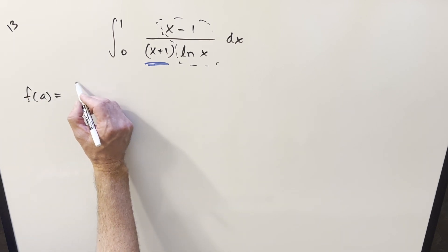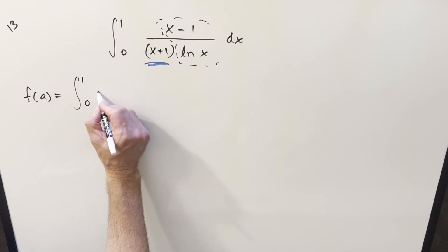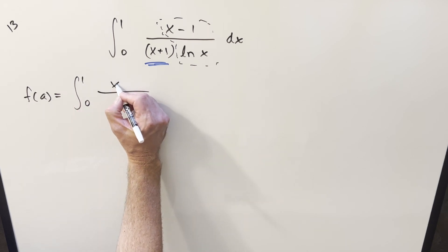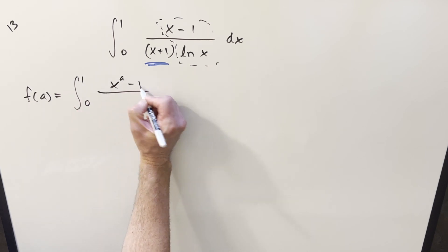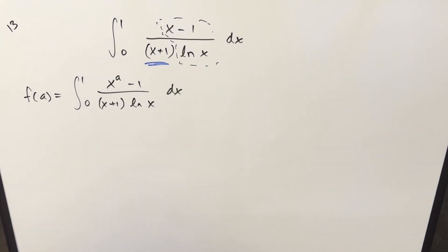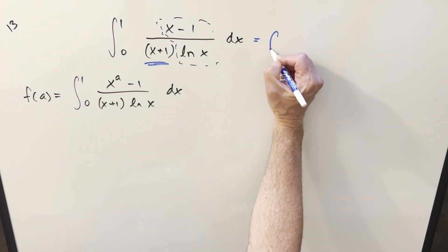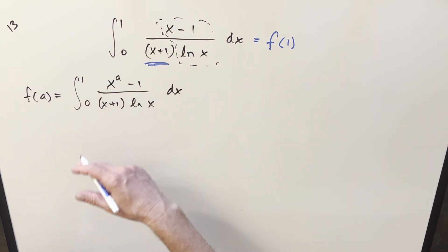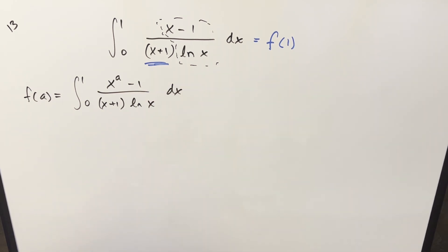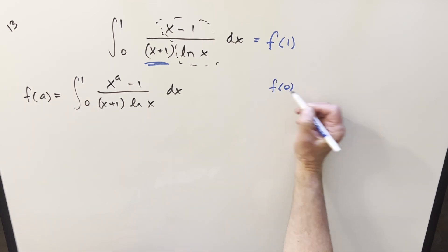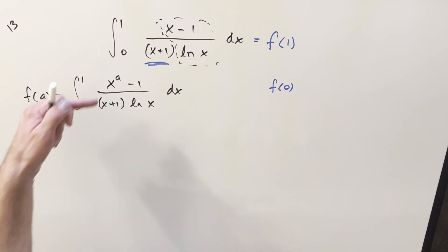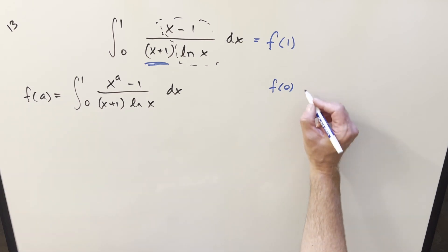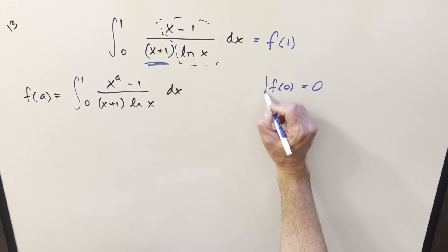We're going to create some variable a, and we'll create it on the x in the numerator — we'll have x to the a minus 1. Our goal is that this original integral is really just going to be f(1). So if we can find our f(a) and plug in 1, we get our solution. Also notice what happens when a equals 0: x to the 0 is 1, the numerator becomes 0, and the whole integral becomes 0. So f(0) = 0, a value we'll come back to later.